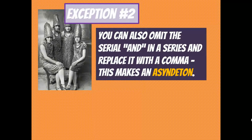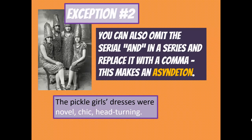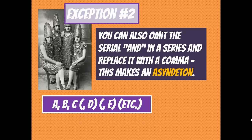Exception number two: you can do the opposite. You can omit the serial 'and' in a series — that last 'and' — and simply put a comma there, calling it an asyndeton. So instead of 'novel, chic, and head-turning,' you say 'novel, chic, head-turning,' leaving out that final 'and.' The pattern is: A, comma, B, comma, C, comma, D, comma, E, comma, etc. — all commas, no ands.